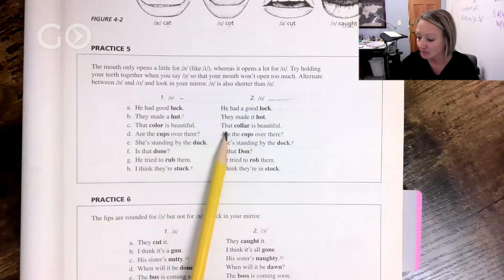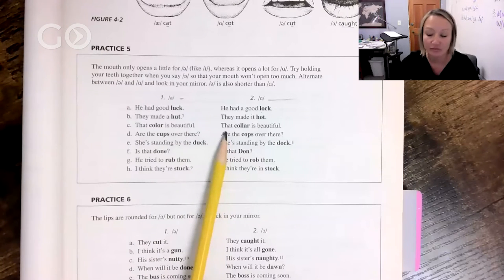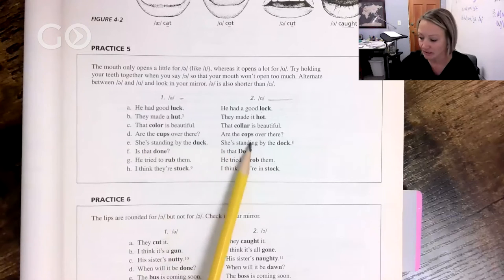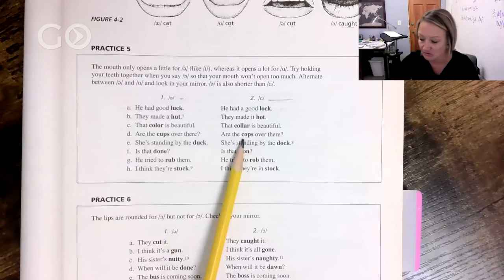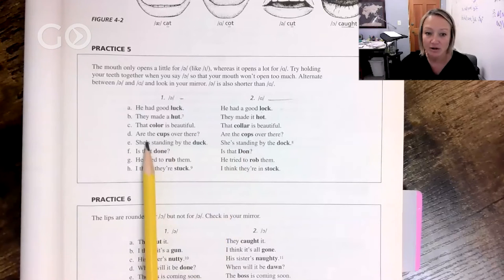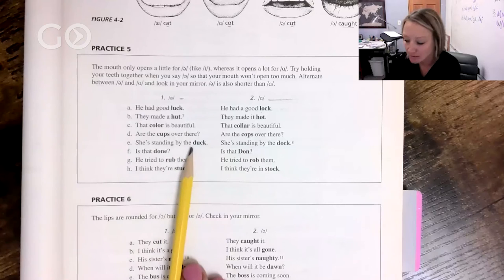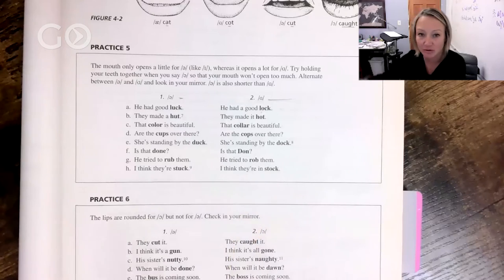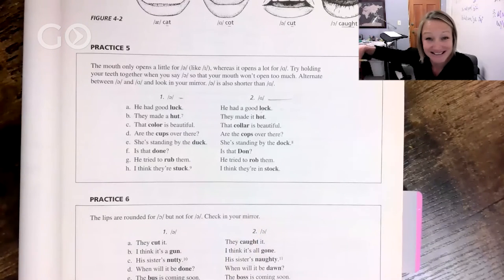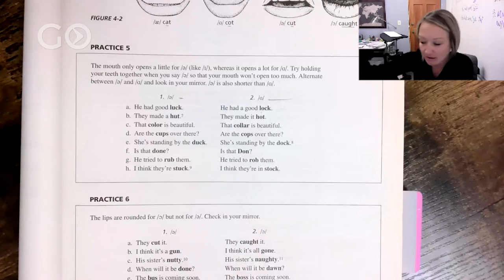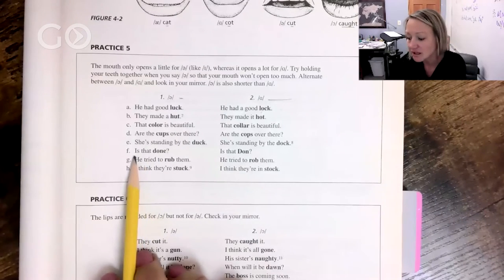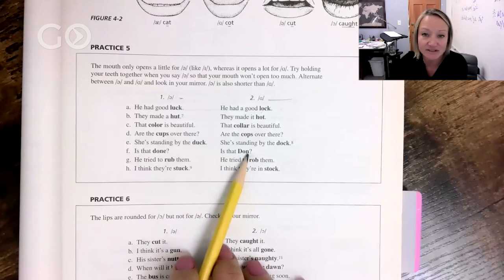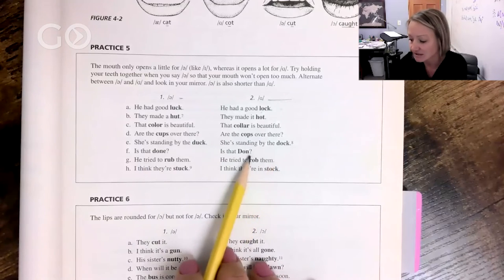That color is beautiful. Are the cups over there, or are the cops over there? We use the word cops sometimes to talk about police officers. She's standing by the duck, the animal. She's standing by the dock, right, where a boat can tie up or a place where like a sidewalk goes into a river or lake or the ocean. Is that done? Is that Don? Don is a man's name.